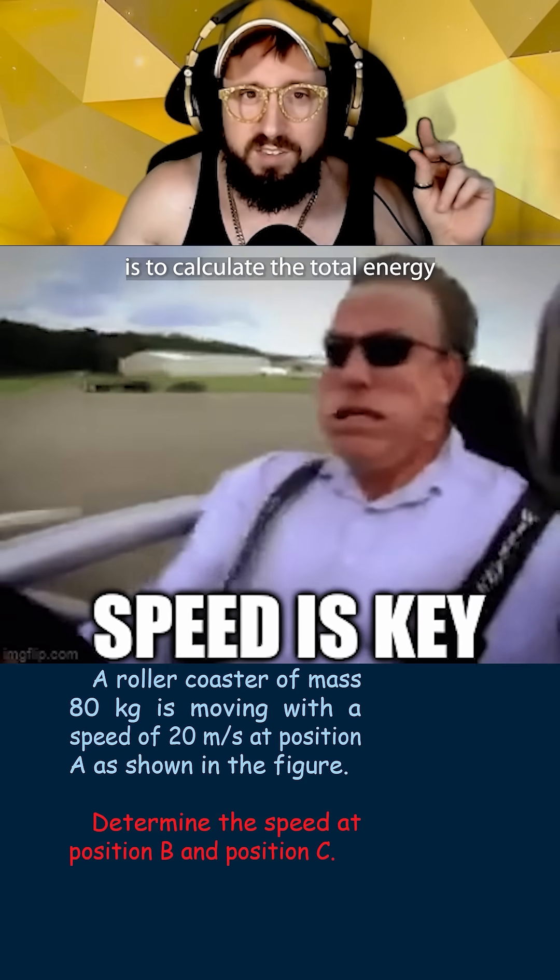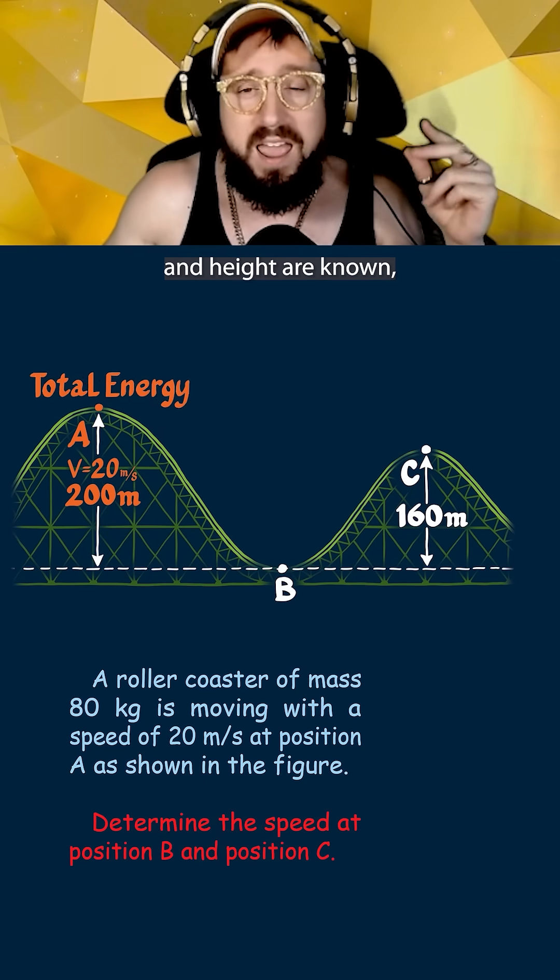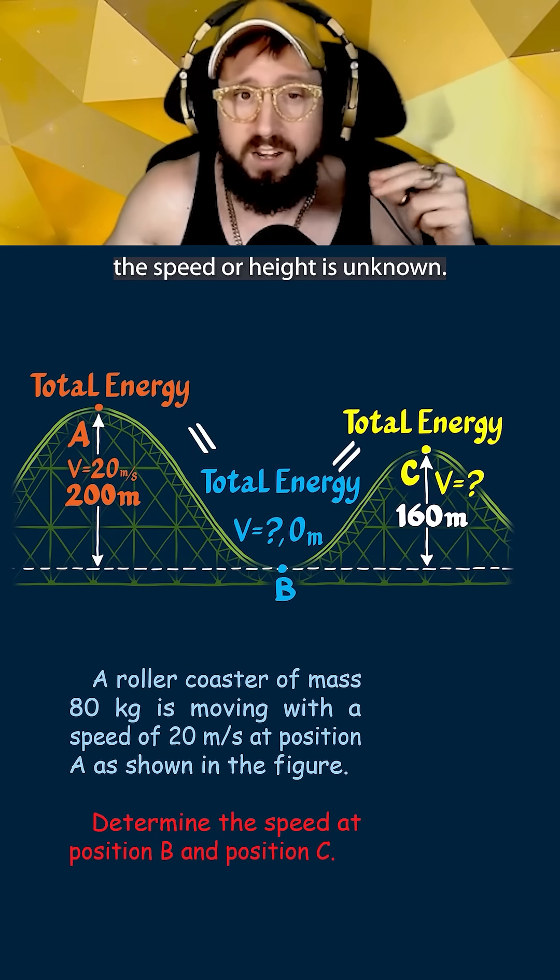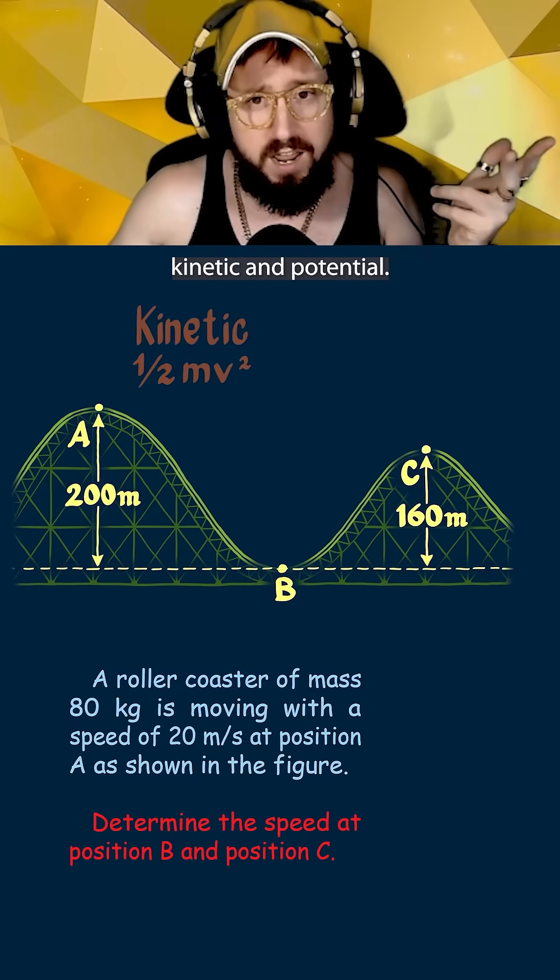The key to solving these types of problems is to calculate the total energy at one point where both the speed and height are known and then set that equal to the total energy at another point where either the speed or height is unknown. For simple problems like this there are just two types of energy, kinetic and potential.